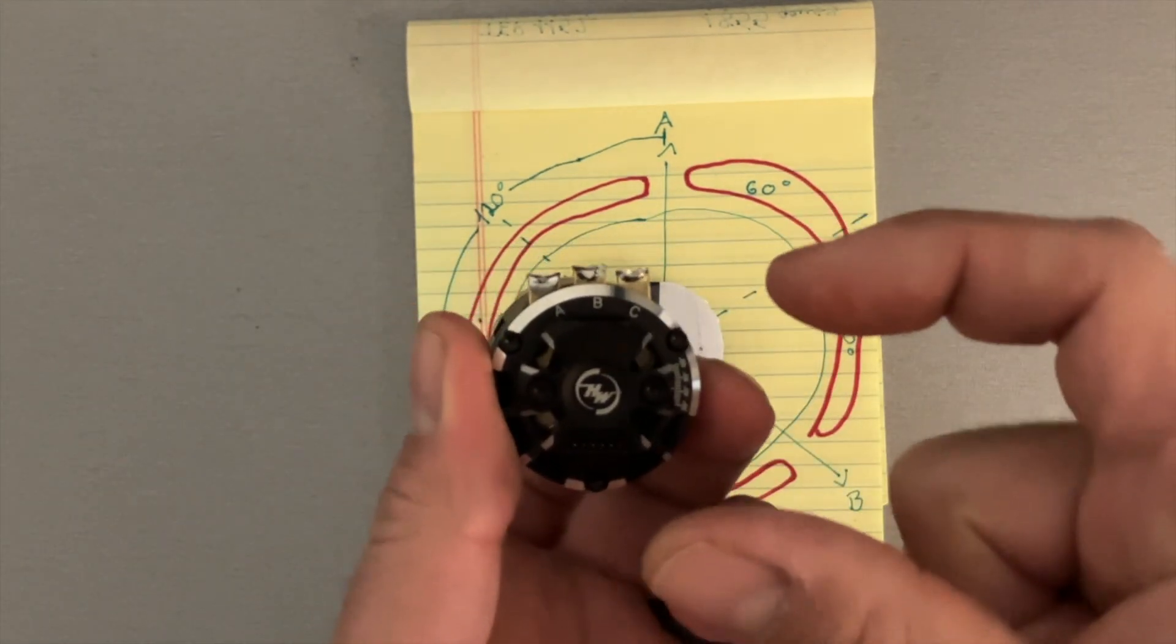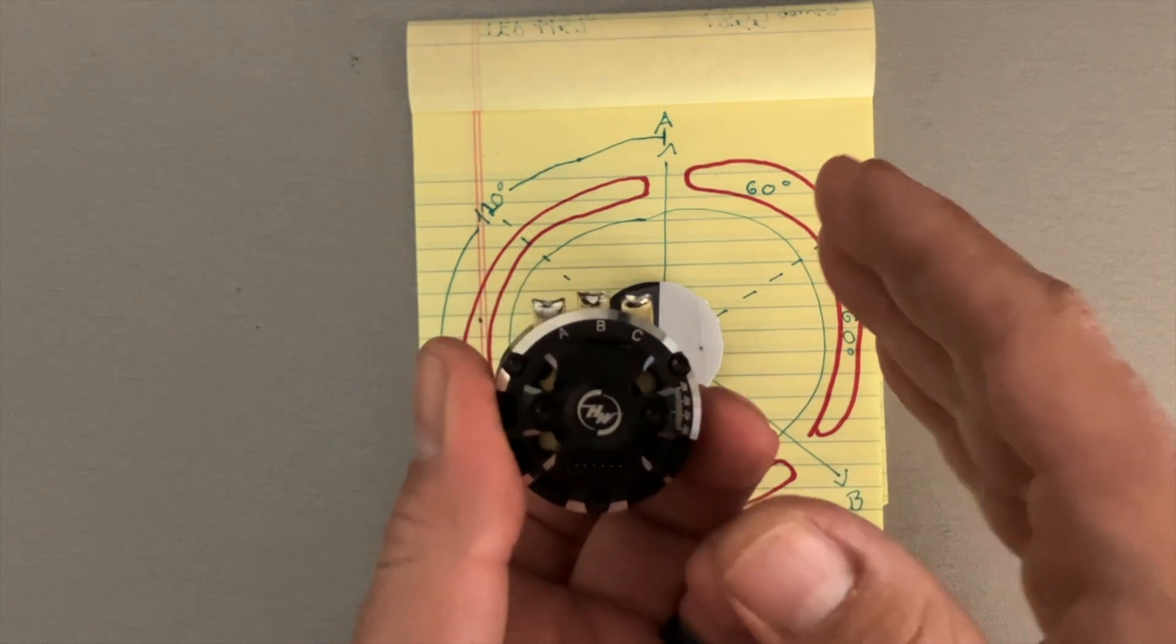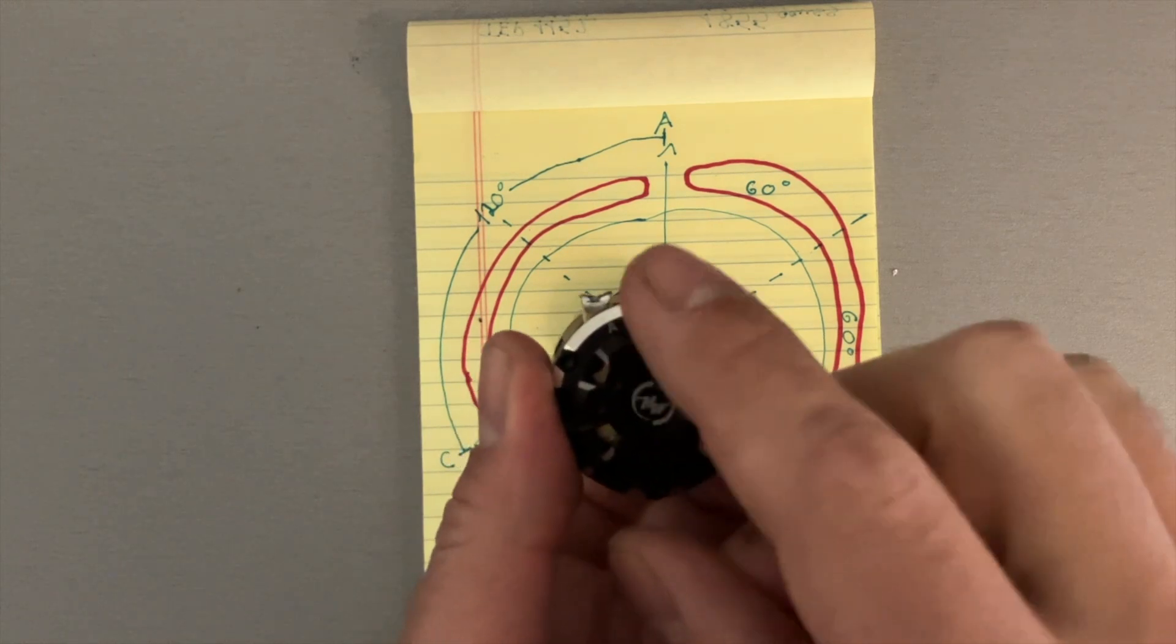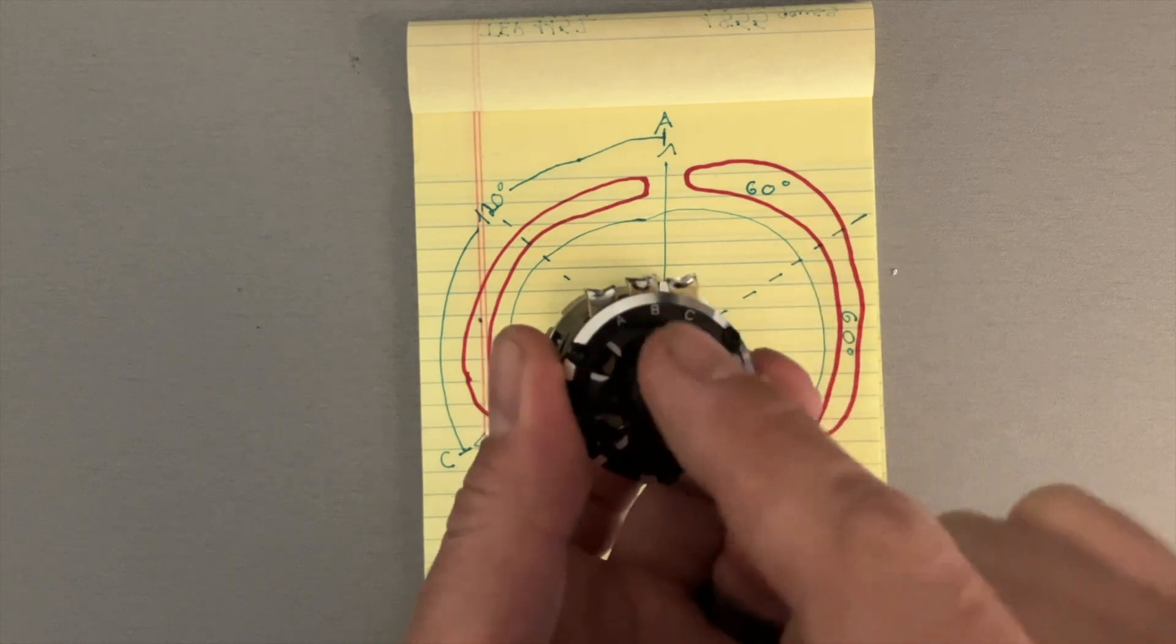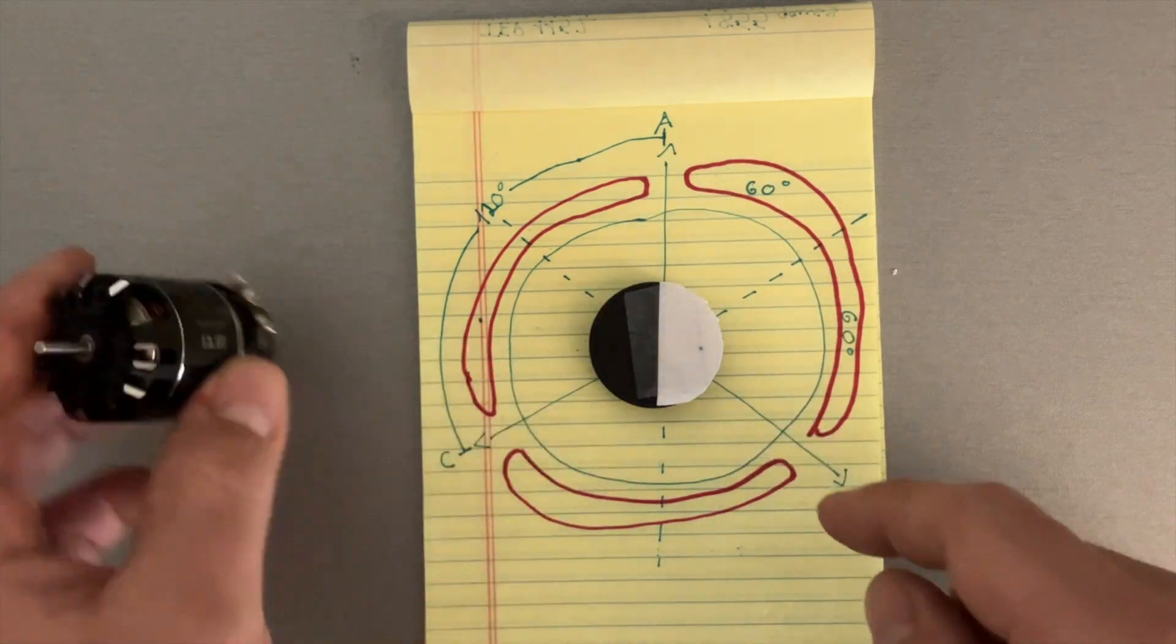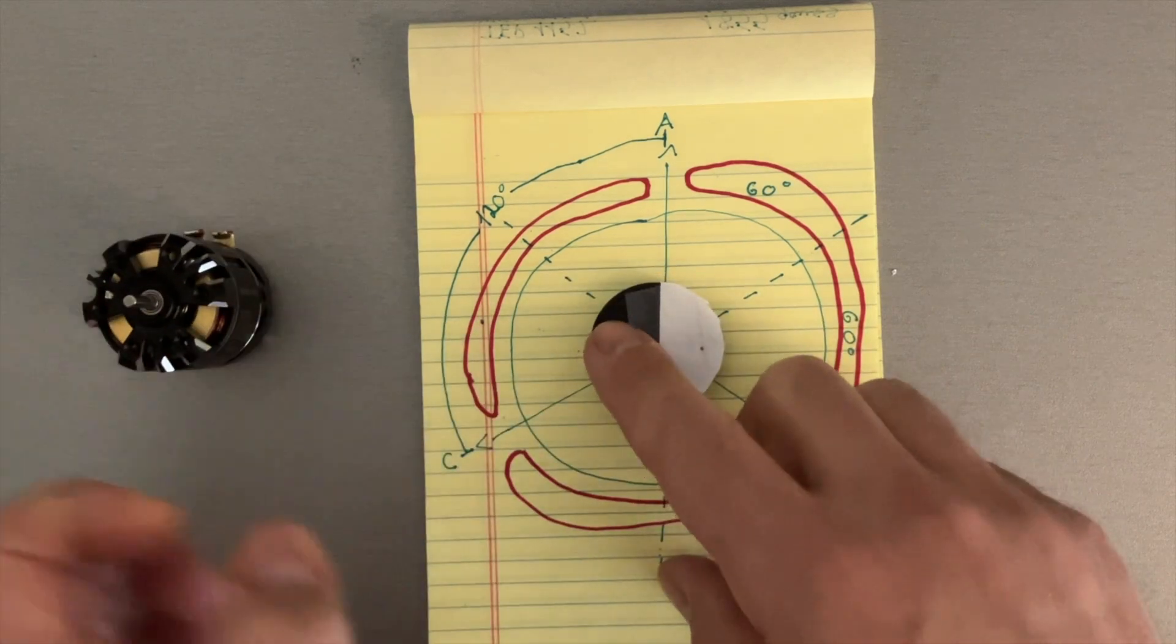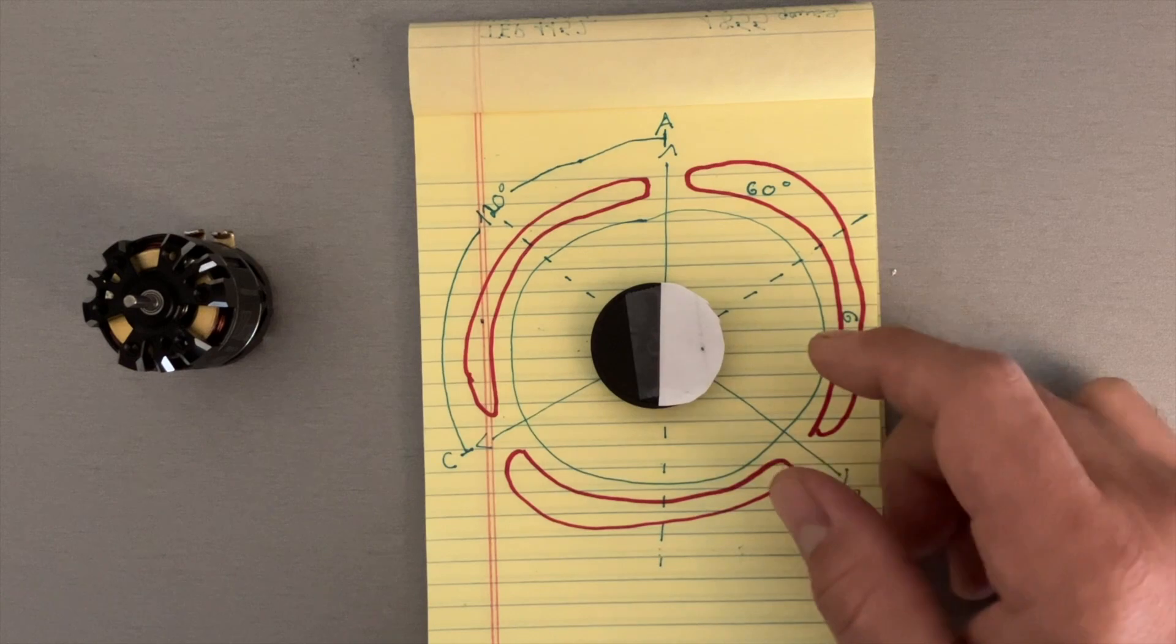So the speed control turns the direct current, which is DC, into alternating. So it'll go, for example, positive, negative, and then positive, negative, and then again. It doesn't matter for the purposes of this.